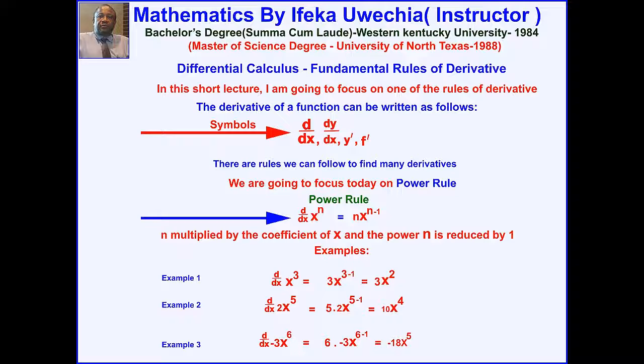What do we do? We use the power 5 to multiply 2, and x raised to the power 5 minus 1, which is the same thing as 10x raised to the power 4.